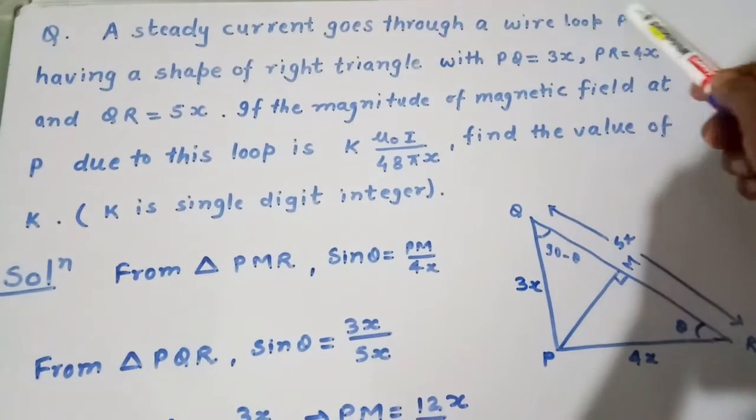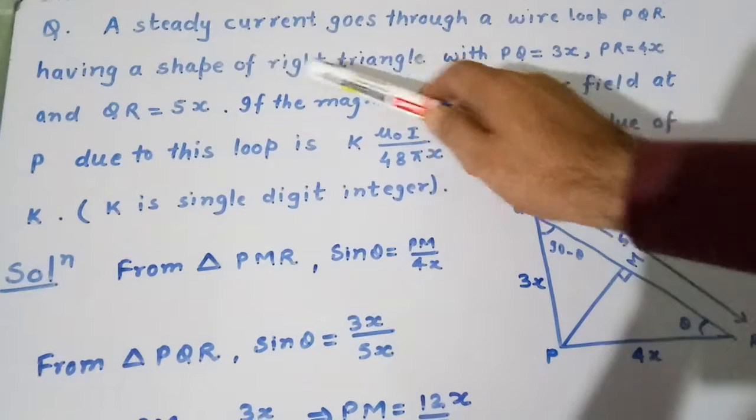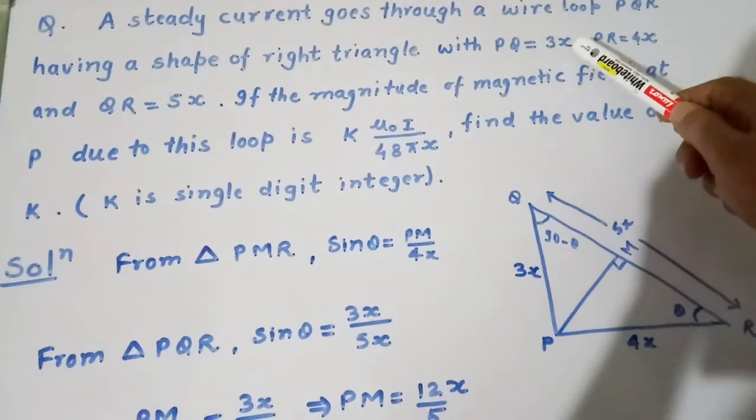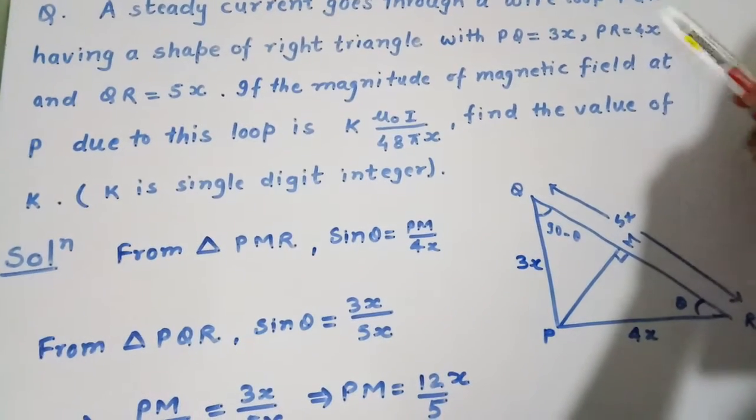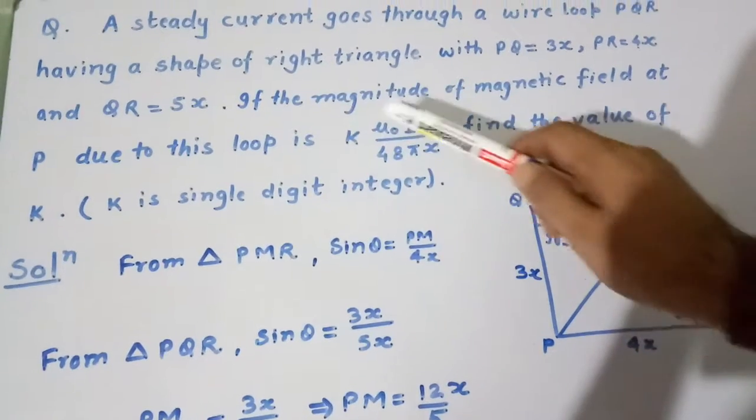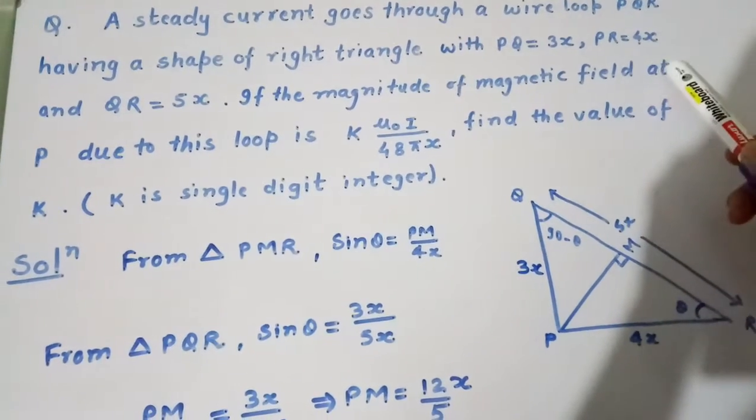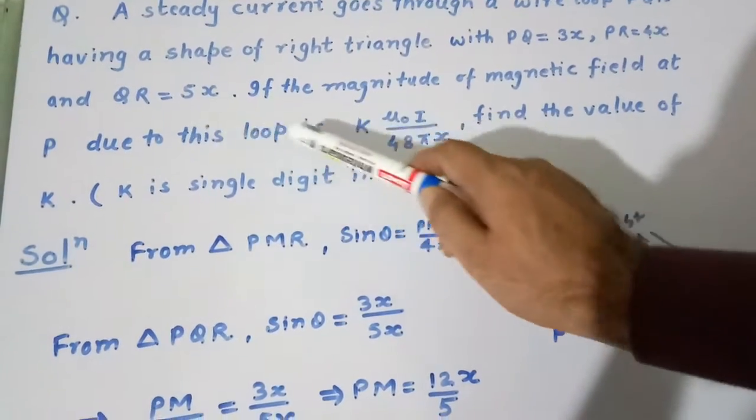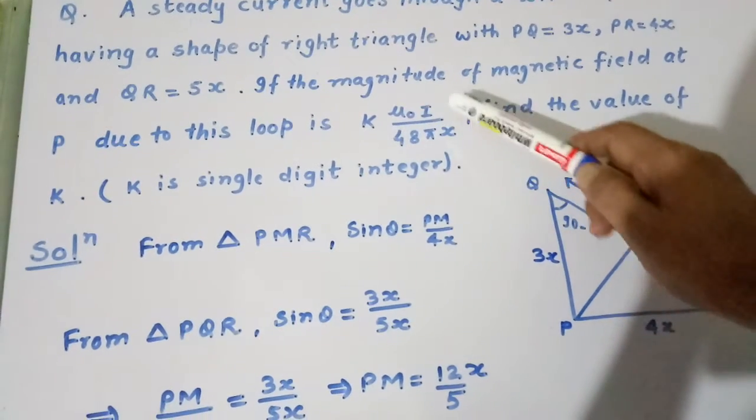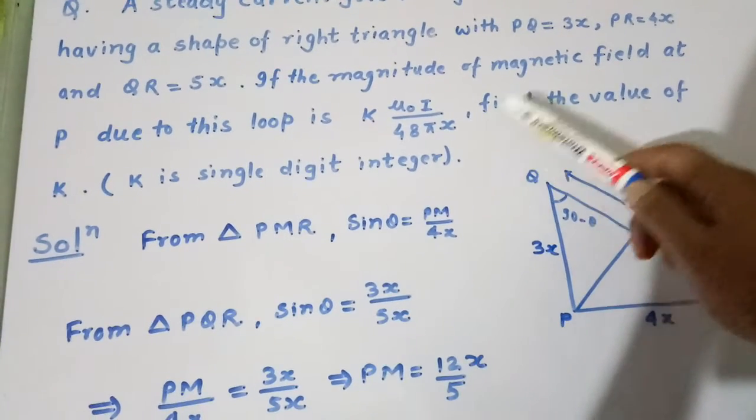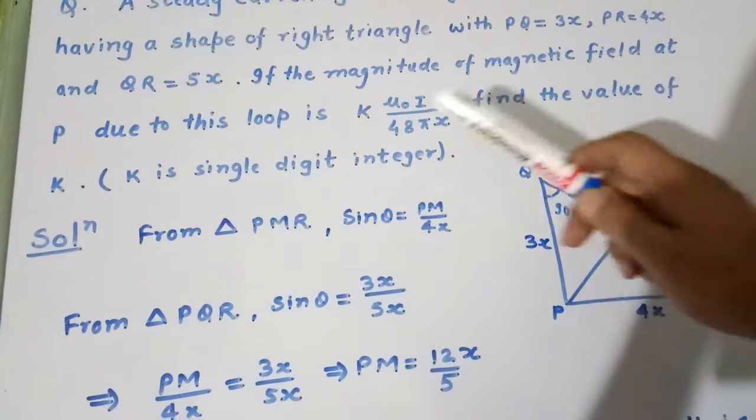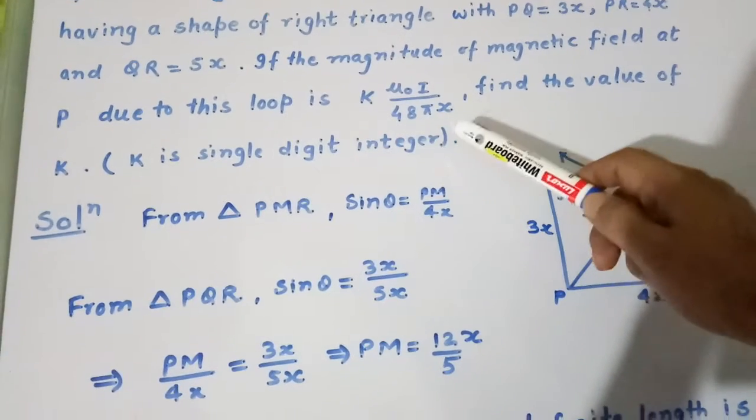Steady current goes through a wire loop PQR having a shape of right triangle with PQ equal to 3X, PR equal to 4X and QR equal to 5X. If the magnitude of magnetic field at P due to this loop is K times μ₀I divided by 48πX, find the value of K where K is a single digit integer.